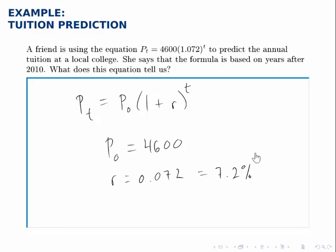Interpreting these, the cost in year zero, or the cost in the initial year, which is 2010, was 4,600. So we conclude that the tuition in 2010 was $4,600 a year.